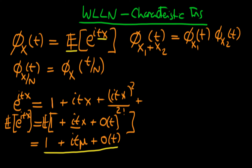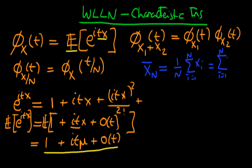How can we use this to prove the weak law of large numbers? We are trying to find the characteristic function of the sample mean x̄_n, defined as 1 over n times the sum from i equals 1 to n of x_i. What we hope is that as n tends to infinity, the characteristic function of our sample mean settles down to something constant at the population mean μ. We can rewrite the sample mean as the sum from i equals 1 to n of x_i divided by n.